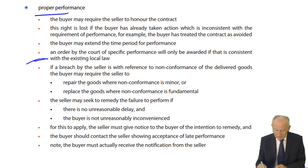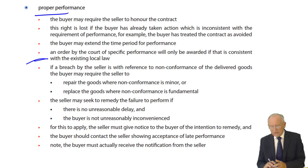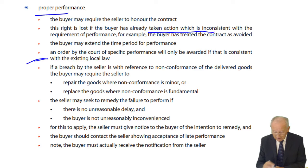So the buyer may require the seller to go ahead and do it. But if the buyer has already taken action to negate the contract — for instance, the buyer might already have given indication that they want to avoid the contract — then they cannot do a 180-degree shift and insist on performance. So the buyer may lose that right if he's already taken action inconsistent with the requirement of performance.